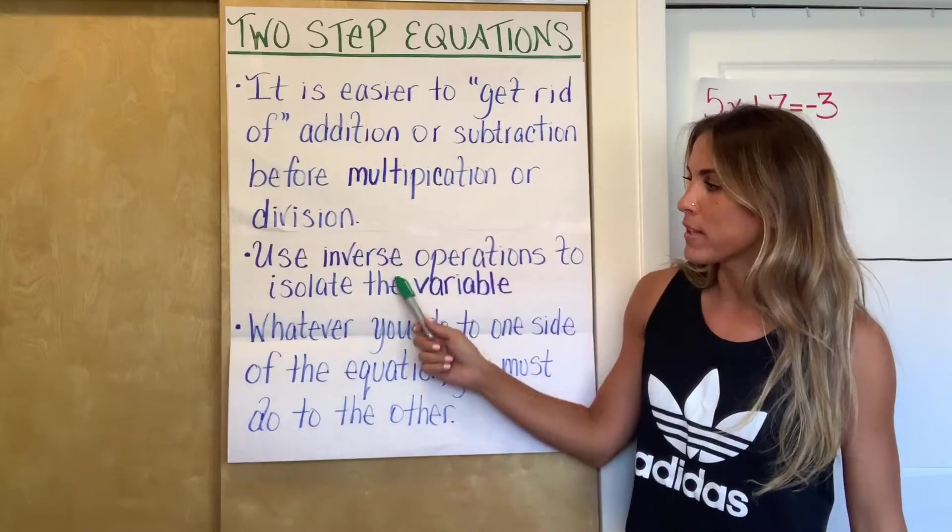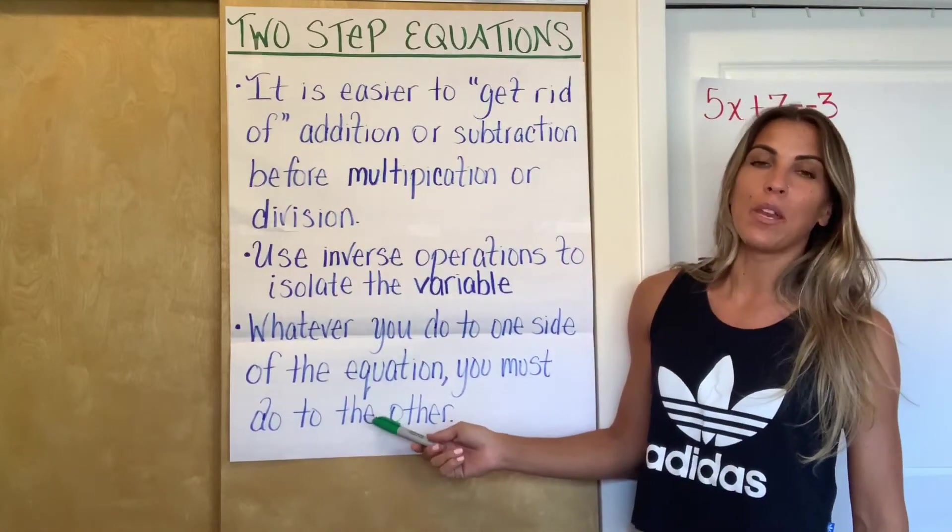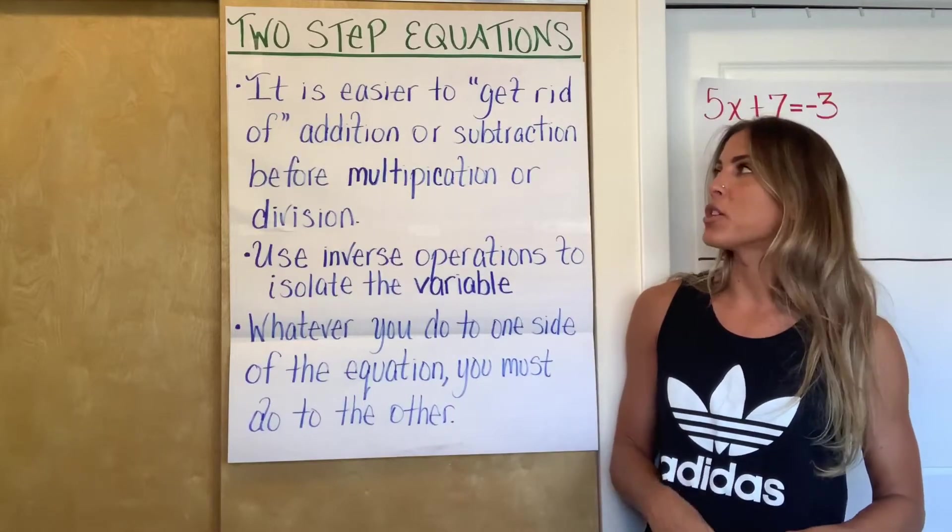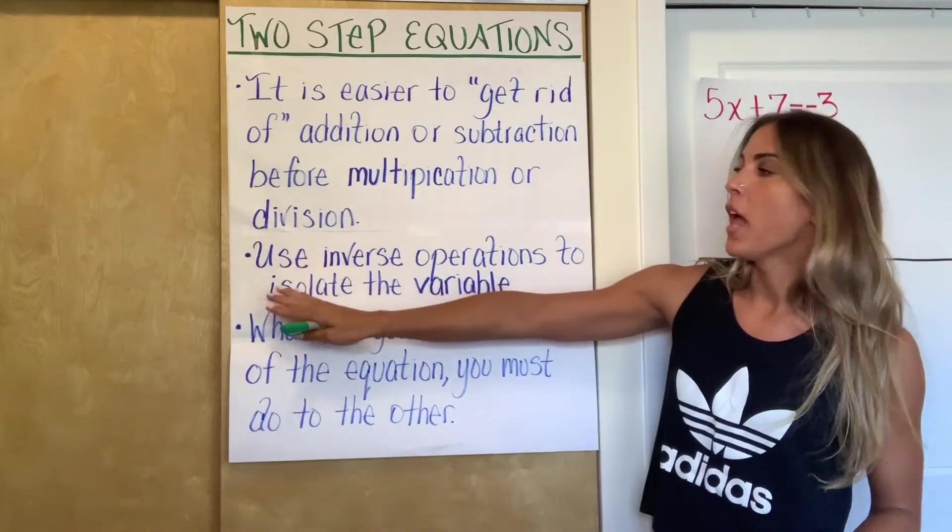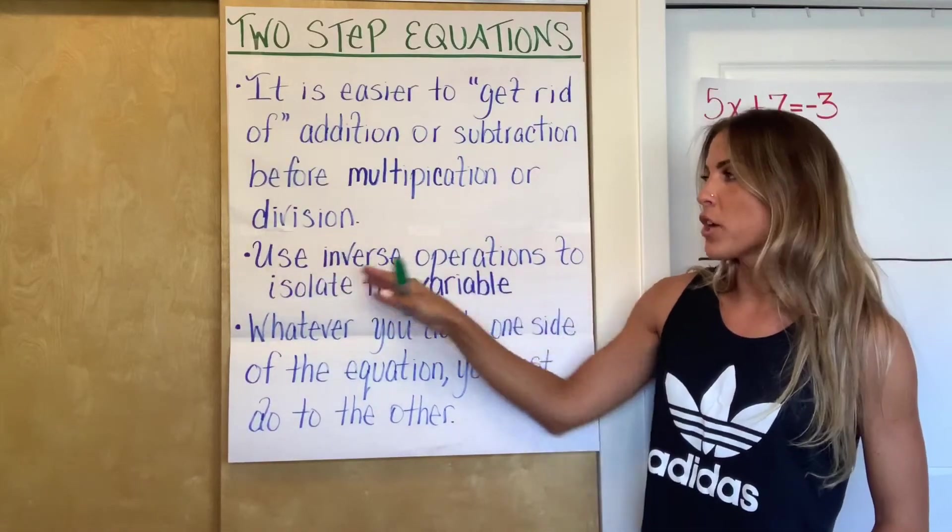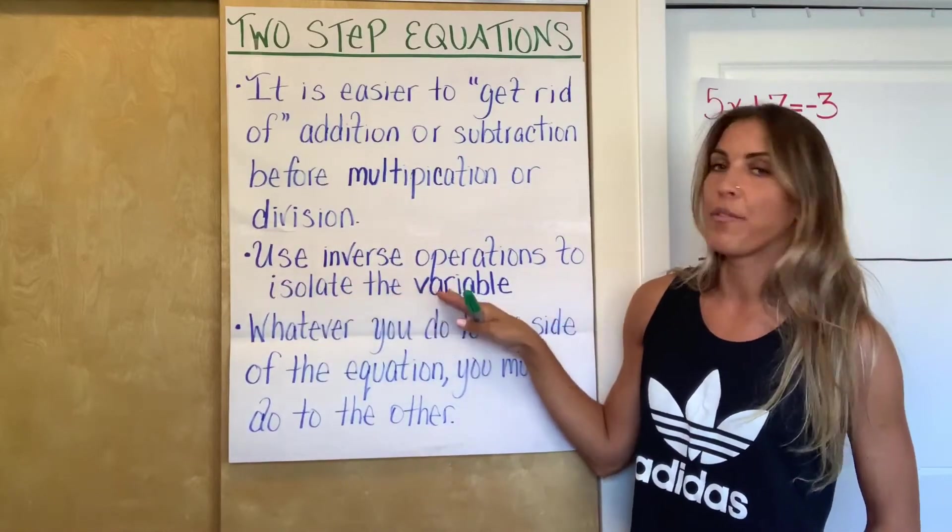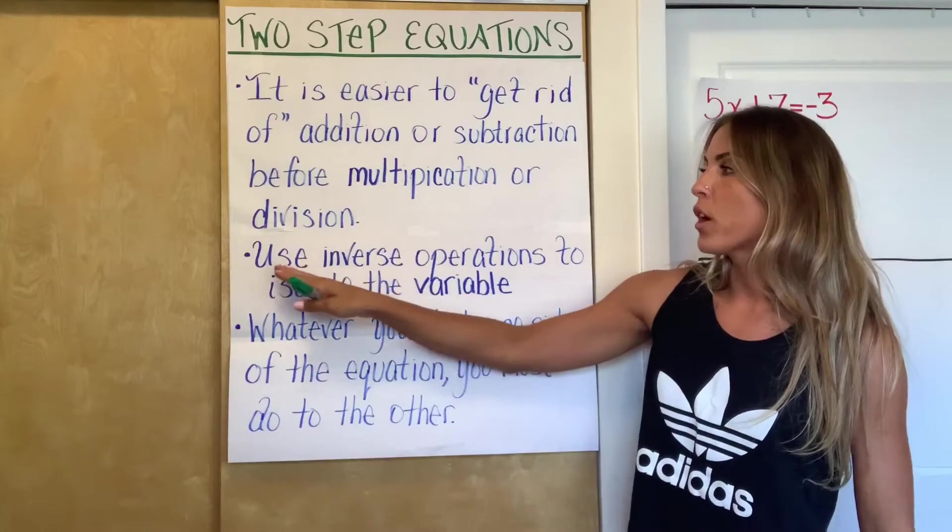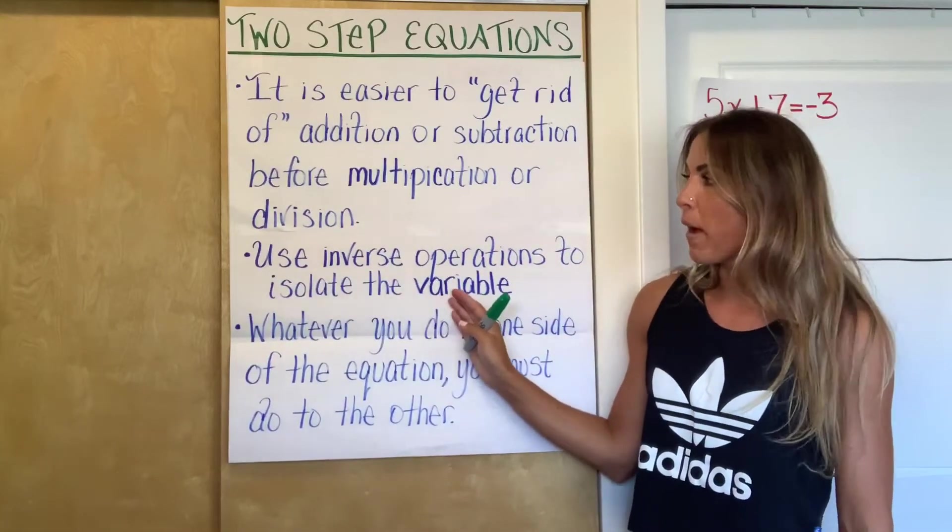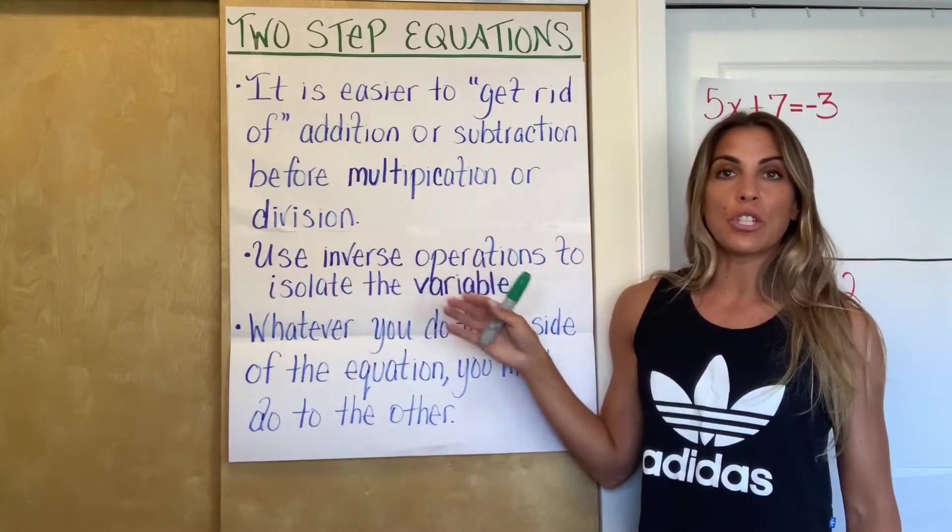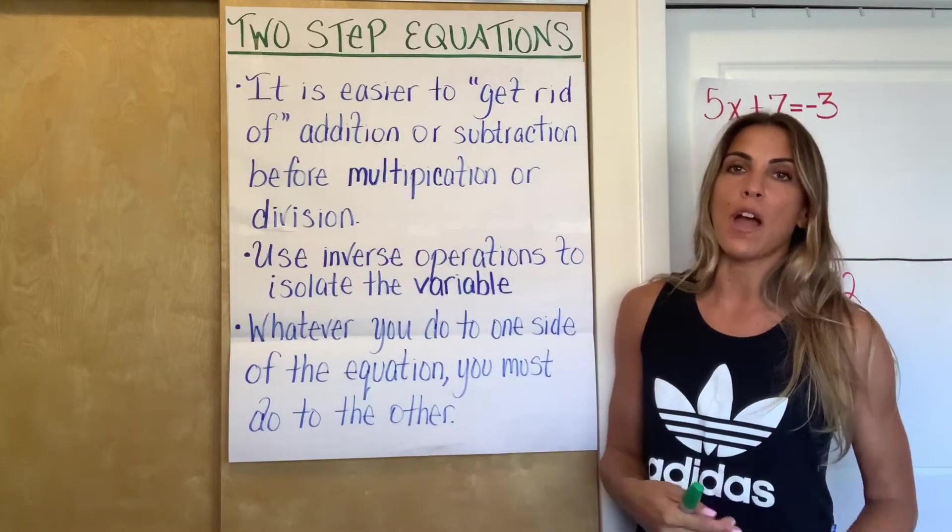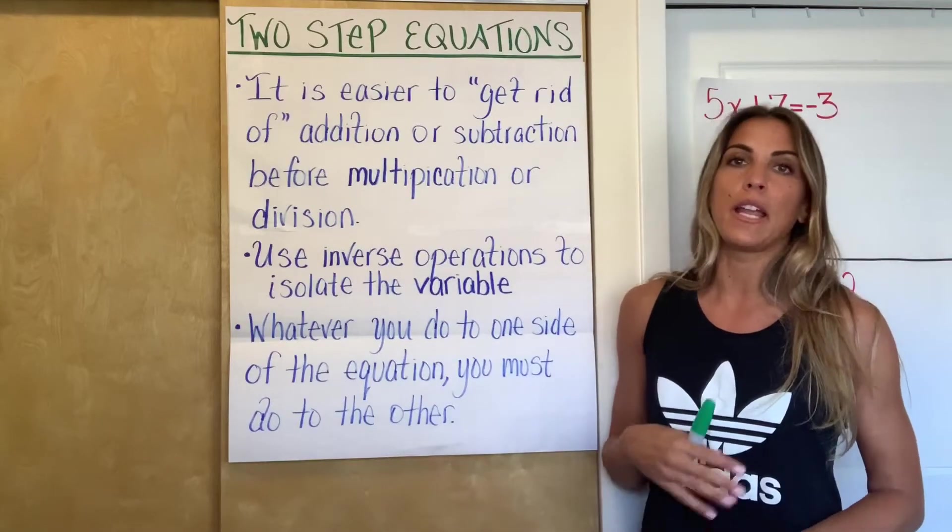So there are three main bullet points that I think you need to know and you might want to write down that'll help you have a strategy for solving two-step equations. So I'm actually going to start in the middle because this comes straight from the one-step equation process. Our main objective is to isolate the variable, meaning get it by itself, and we're going to use inverse operations to isolate the variable. And if you need a reminder, inverse operations just means the opposite operation. So the inverse operation of adding is subtracting. The inverse of multiplying is dividing and so forth.